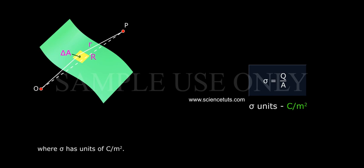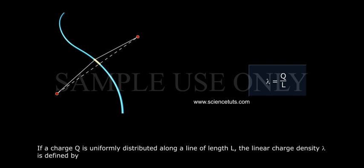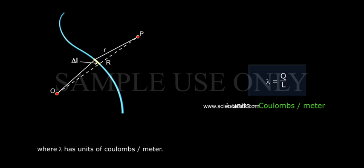If a charge Q is uniformly distributed along a line of length L, the linear charge density lambda is defined by lambda equals Q by L, where lambda has units of coulombs per meter.